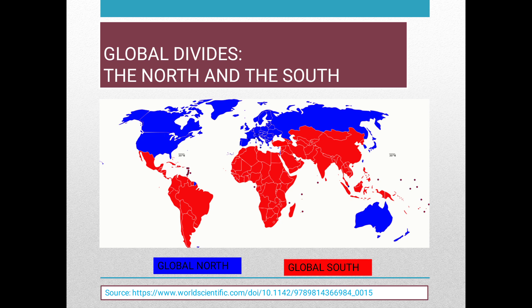North and South have been established terms of use in debates about international political economy since the 1960s. In their most basic form, the terms are regarded as a shorthand for distinguishing rich countries from poor countries. The North is taken to include the industrialized, high-capital income national political economies, of which the majority are located in the Northern Hemisphere. The South describes those countries with high levels of poverty and comparatively low levels of industrialization, large numbers of which exist in the Southern Hemisphere.